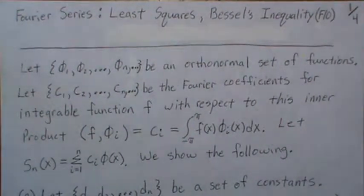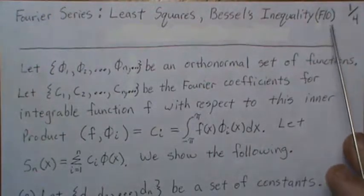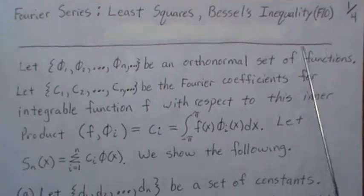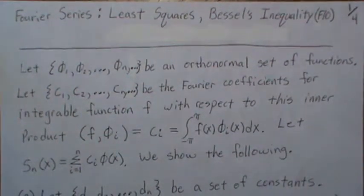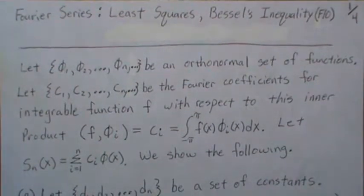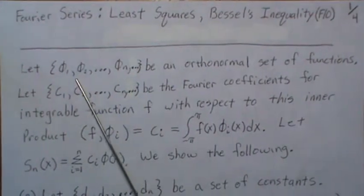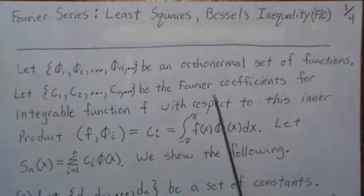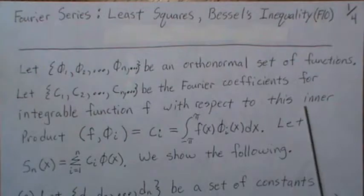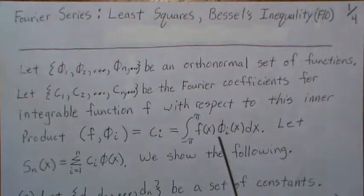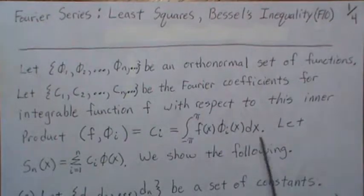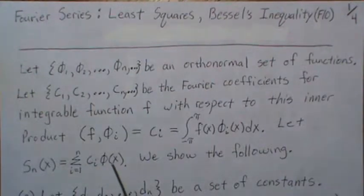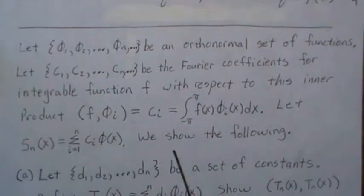Hello, in this video we're going to continue on with the Fourier series. This is video 10 in my mini-series and we're specifically going to examine least squares and Bessel's inequality. Here we're going to look at an orthonormal set of functions — phi_1, phi_2, phi_n — and these are going to be the Fourier coefficients for some integrable function f with respect to this inner product. We're going to let S_N be this partial sum, a linear combination of our orthonormal functions.